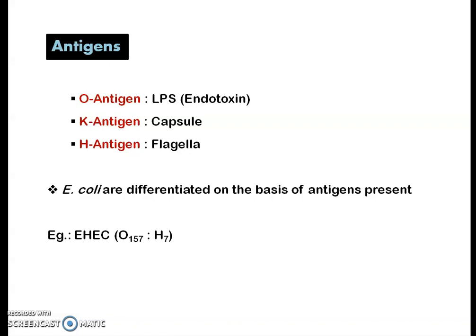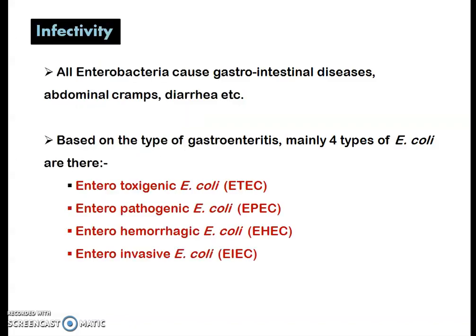The second antigen is K antigen, present in the capsule, and the third is H antigen, present in the flagella of E. coli. E. coli strains are differentiated based on the antigens present in them. For example, EHEC (enterohemorrhagic E. coli) strains are denoted by their antigens, such as O157 and H7.